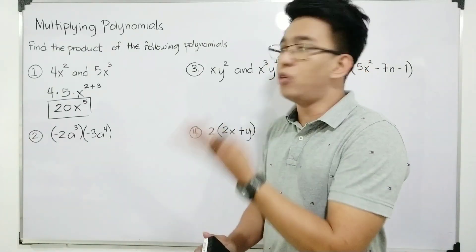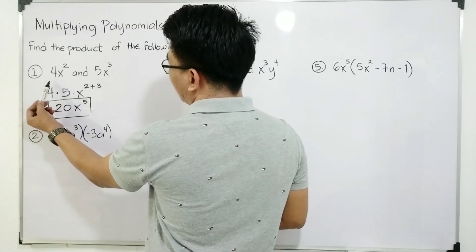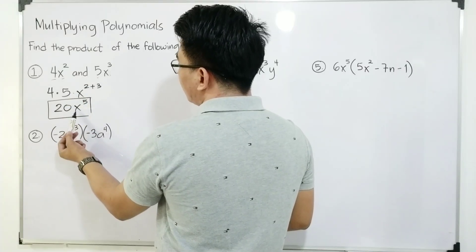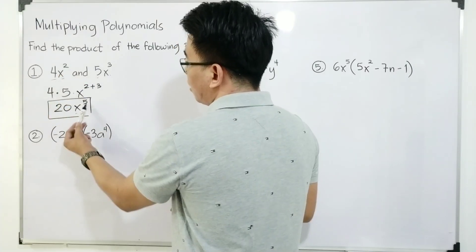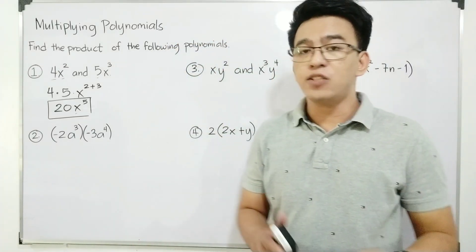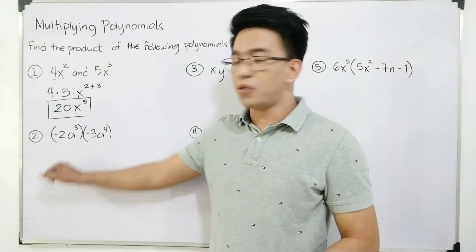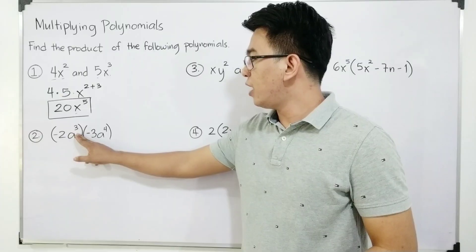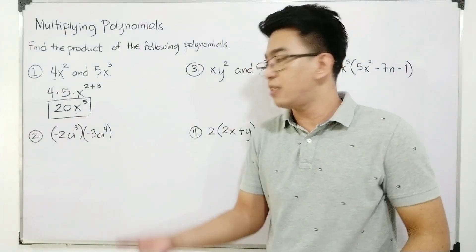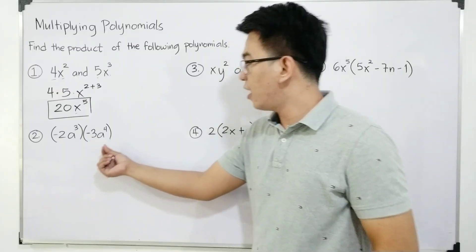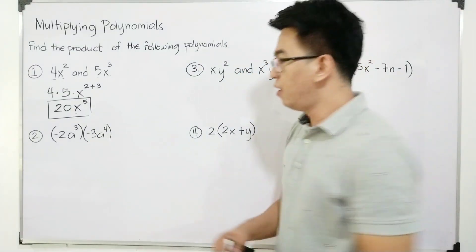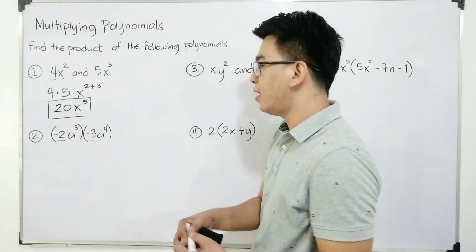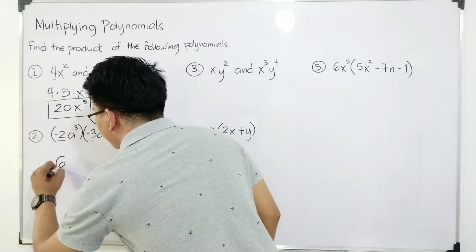So if you practice multiplying monomials, what you need to do is multiply 4 and 5, that is 20. And if you have x squared times x cubed, simply copy the variable and add 2 and 3. This gives us the product of 20x to the 5th power. So let's move on with item number 2. In item number 2, we are asked to find the product of negative 2a raised to 3 times negative 3a to the 4th power. First, multiply their coefficients.